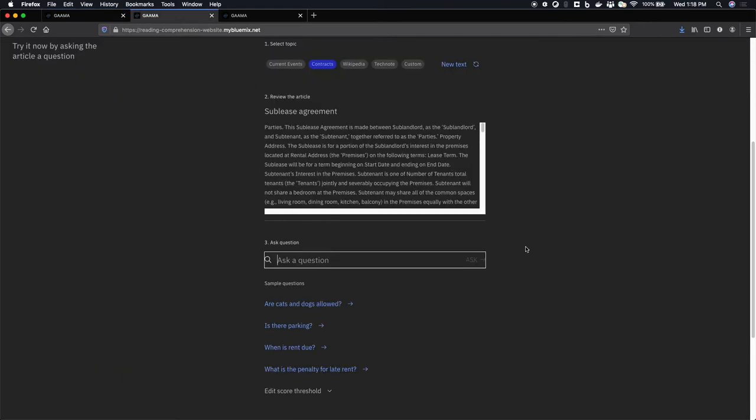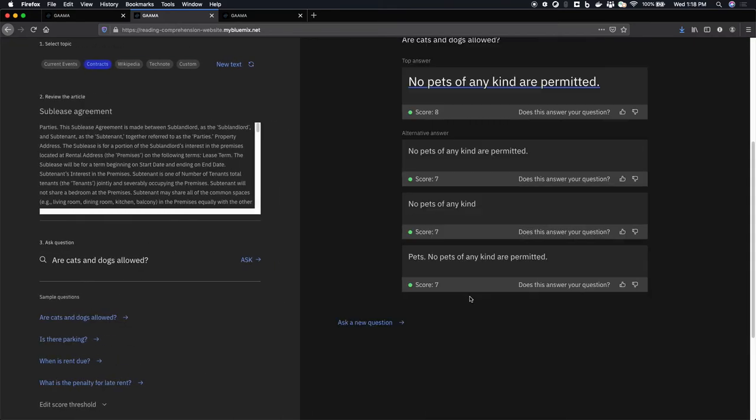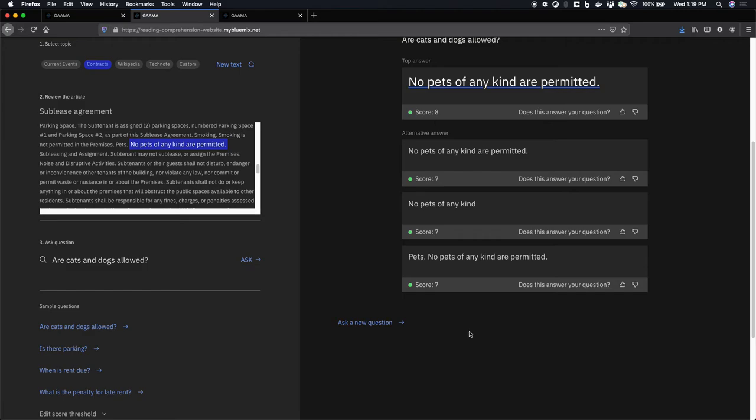Next we're going to take a look at a sublease agreement. This is the same example we saw earlier, and we're going to ask if cats and dogs are allowed, and as we saw before, no pets of any kind are permitted.